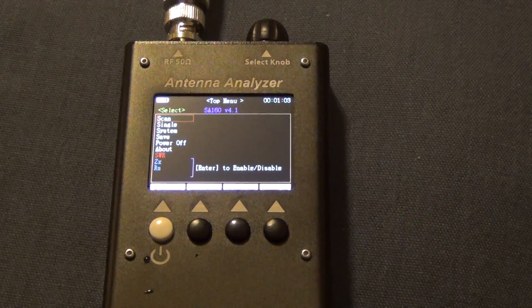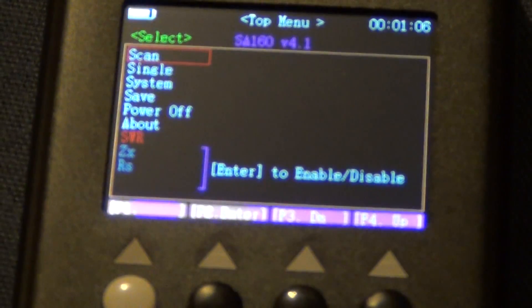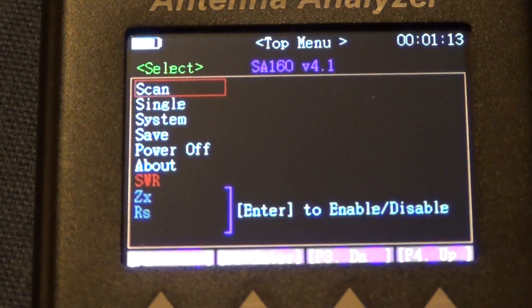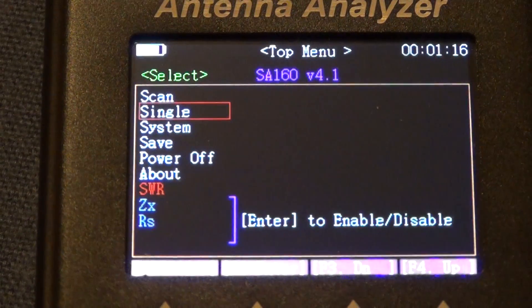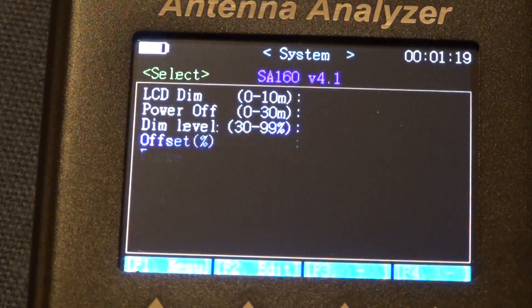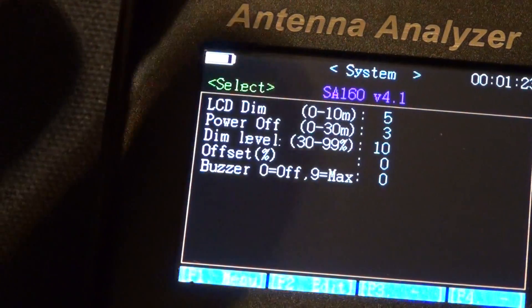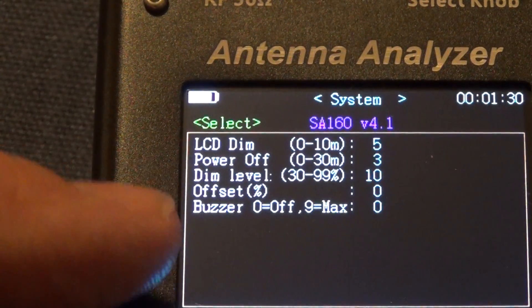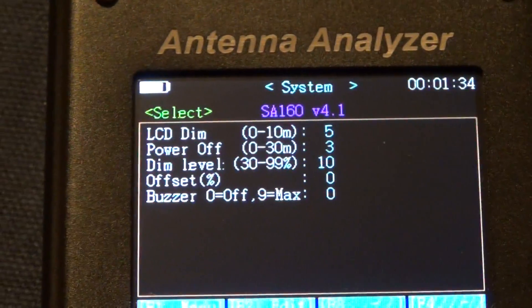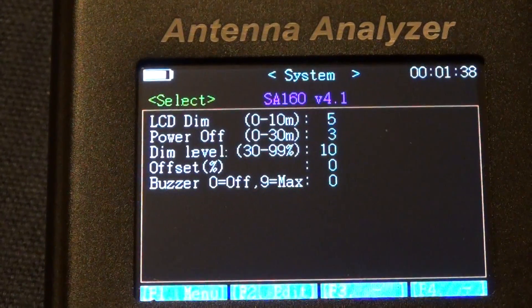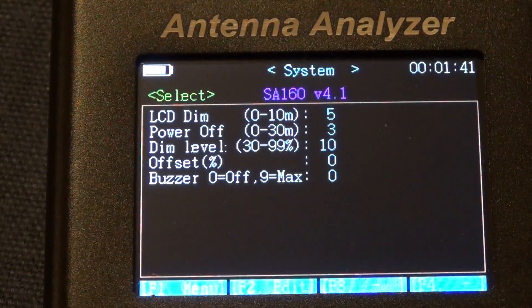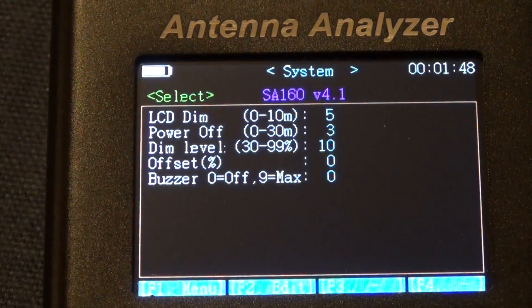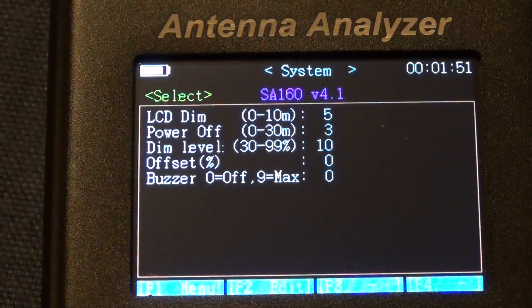So we're gonna go back here to the main view where you can see most of the action going on. I will move this down so I can do a scan, a single scan. I can get some system information. If I do an enter here, you can change the LCD brightness, you can change the timer, the auto shutdown, dim level, offset, and if you want any beep or not as you can hear.